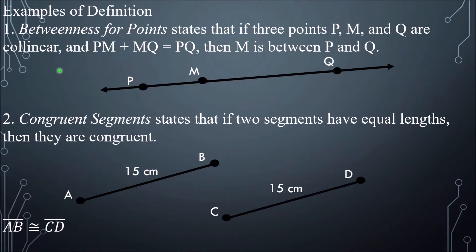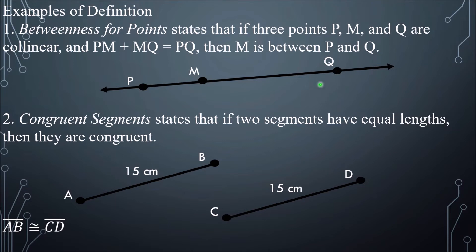An example of a definition is betweenness for points. It states that if three points P, M, and Q are collinear, and PM plus MQ is equal to PQ, then M is between P and Q. That is the definition of betweenness — M is between P and Q.